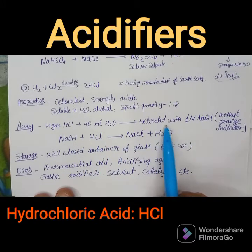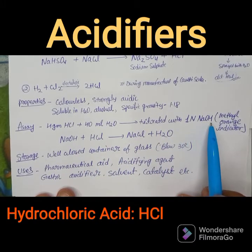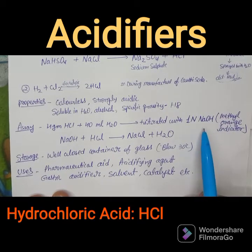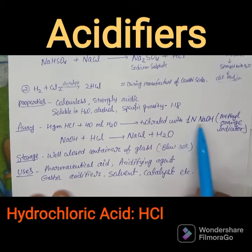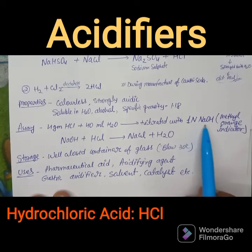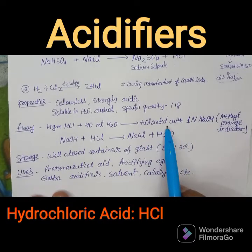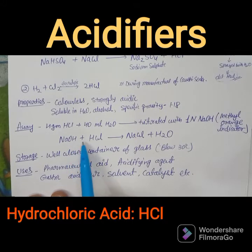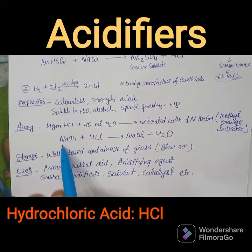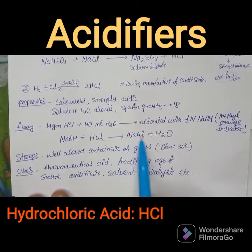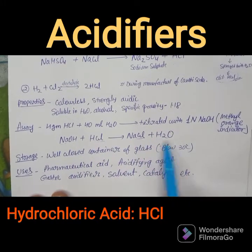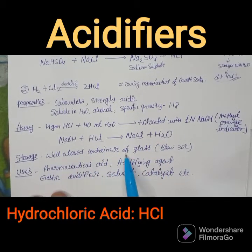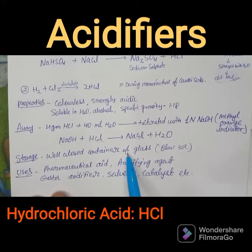For the assay, 4 grams of hydrochloric acid are dissolved in 40 mL of water and titrated with 1 N sodium hydroxide using methyl orange indicator. The titrated value is compared to the standard reading to determine purity. The reaction is: NaOH + HCl → NaCl + H₂O.